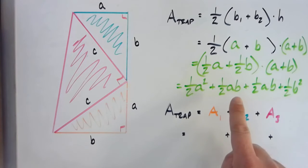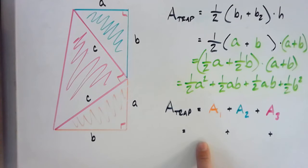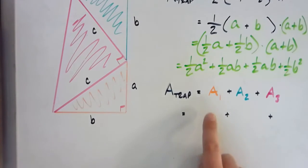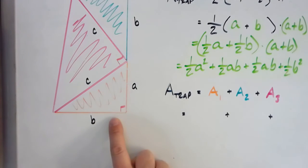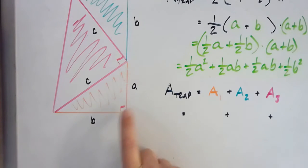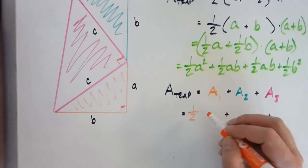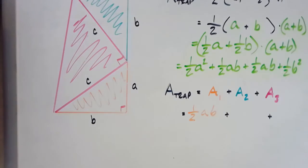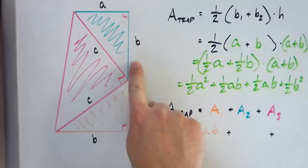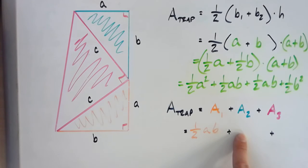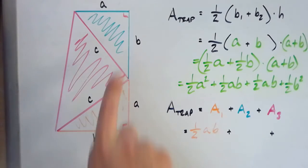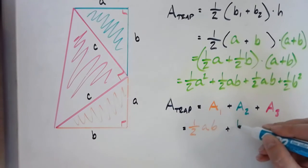Now for Method 2 — the same trapezoid, different strategy. We split it into three triangles: orange, blue, and pink. The area of the orange triangle is one-half base times height, where base is B and height is A, giving one-half AB. The blue triangle is congruent to the orange one — it's the same triangle copied and pasted — so its area is also one-half AB.